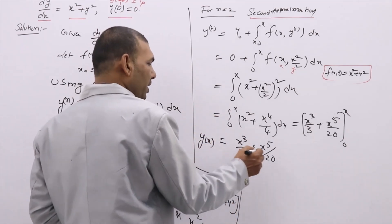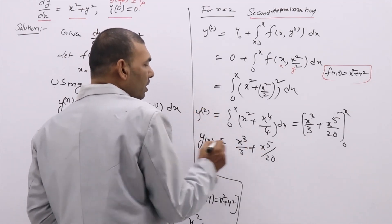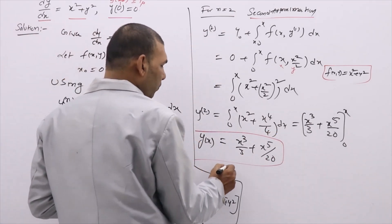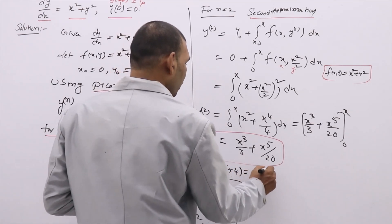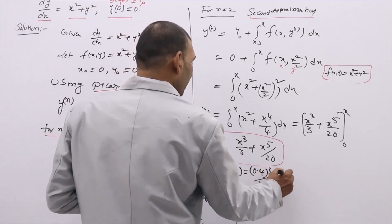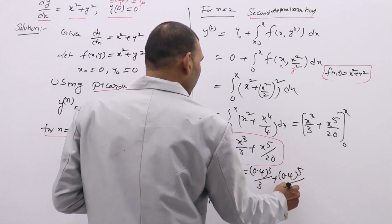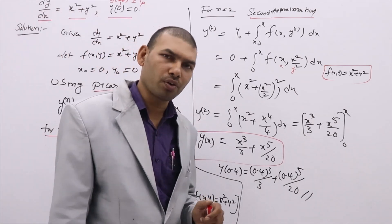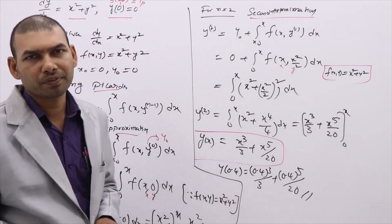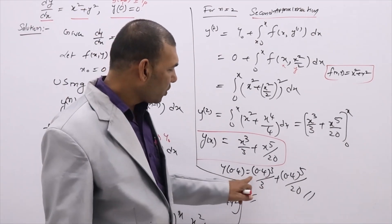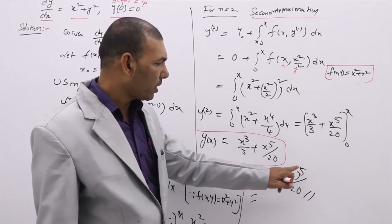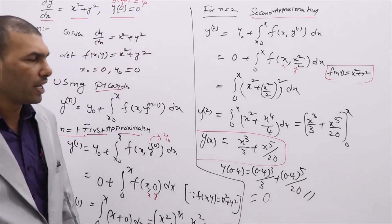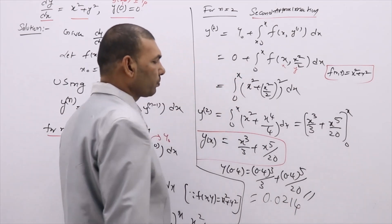So y(x) by Picard's method is x cubed by 3 plus x to the power 5 by 20. Now we need to find y(0.4). Writing x equal to 0.4: y(0.4) equals (0.4)³ by 3 plus (0.4)⁵ by 20. Use your calculator. You will get y(0.4) equal to 0.0214. This is the answer.